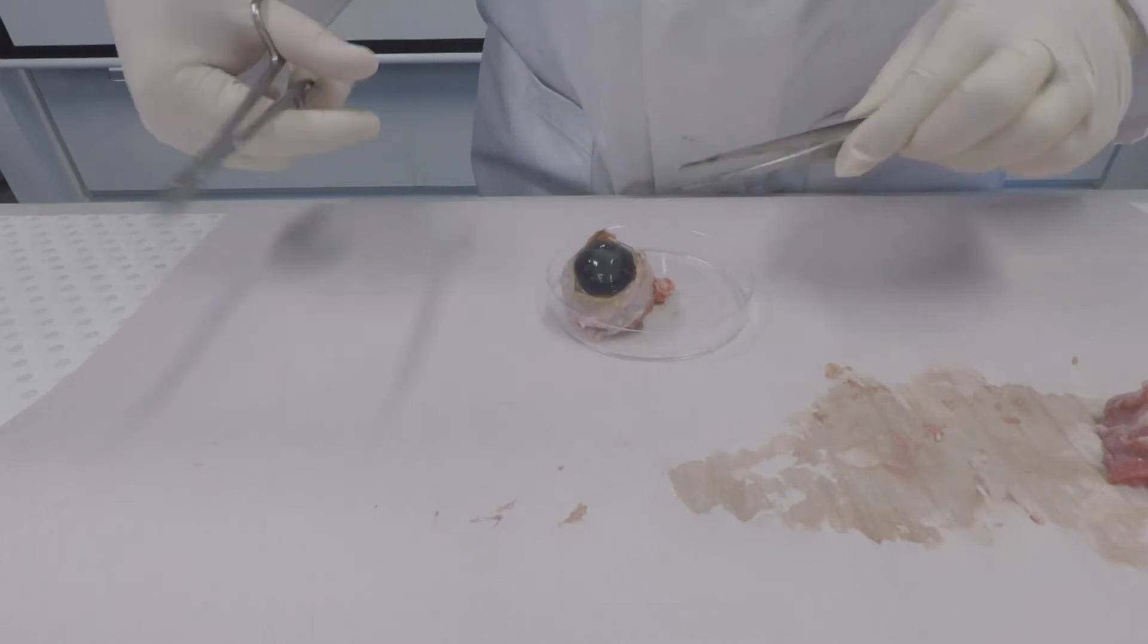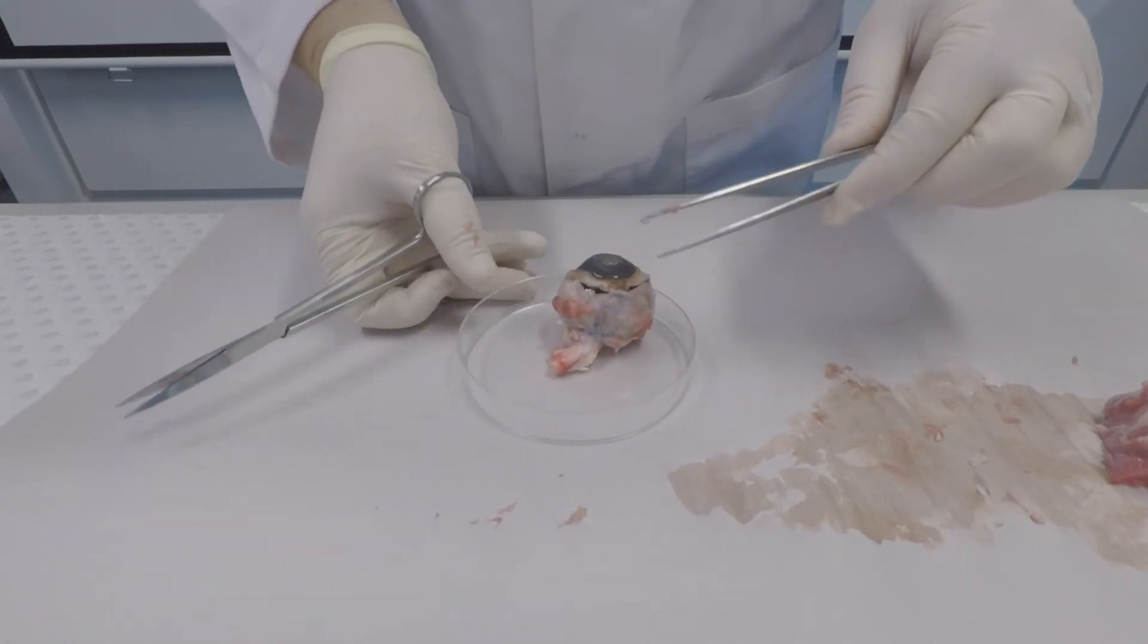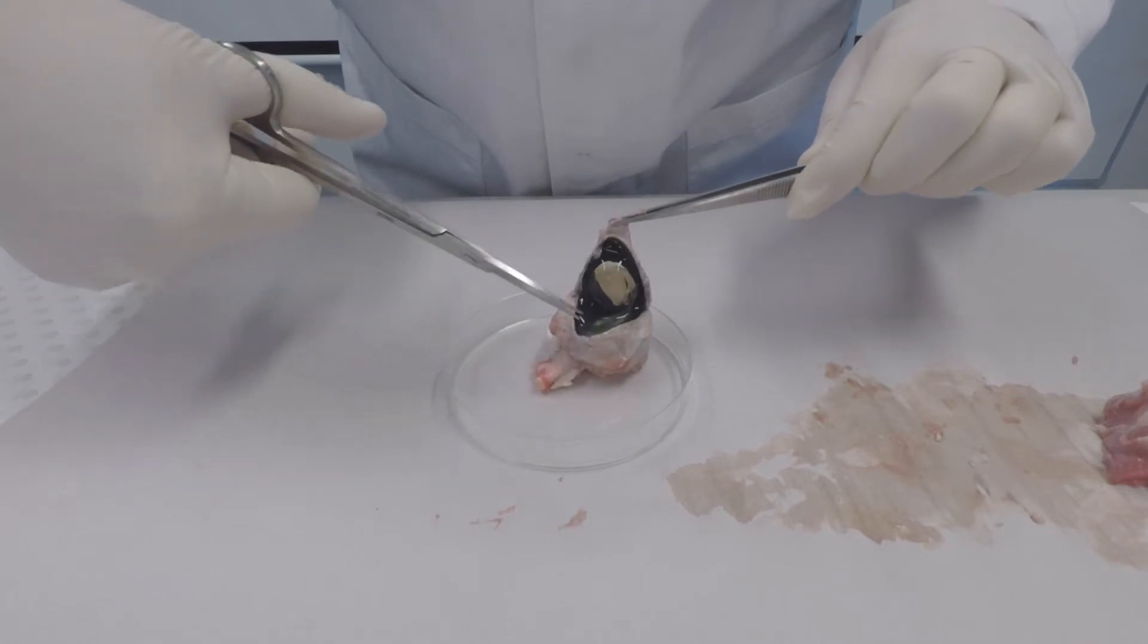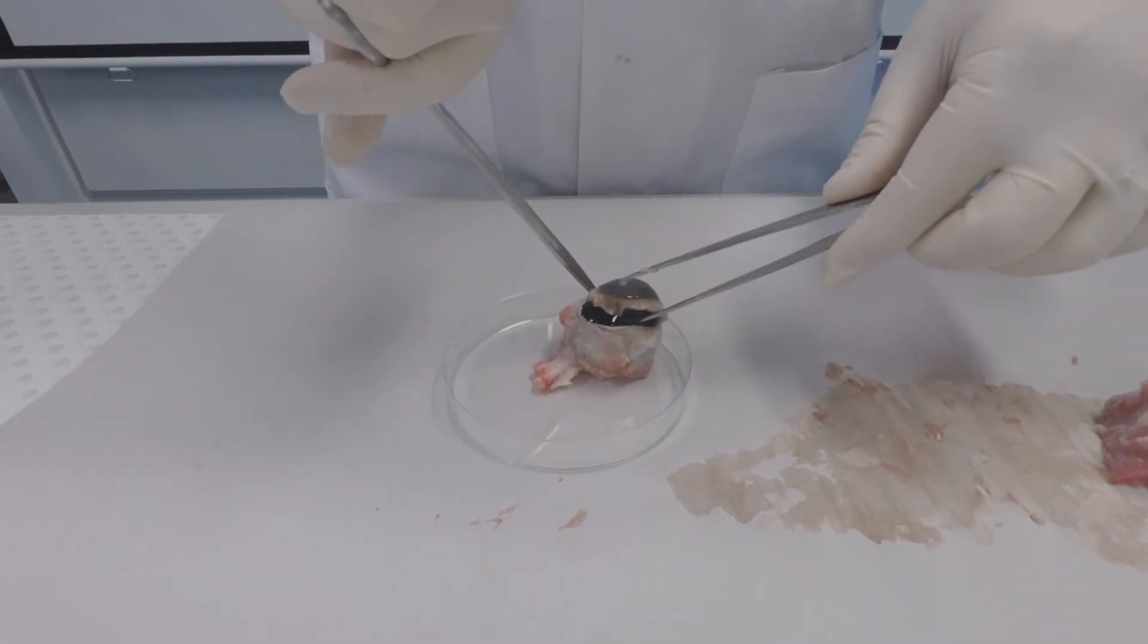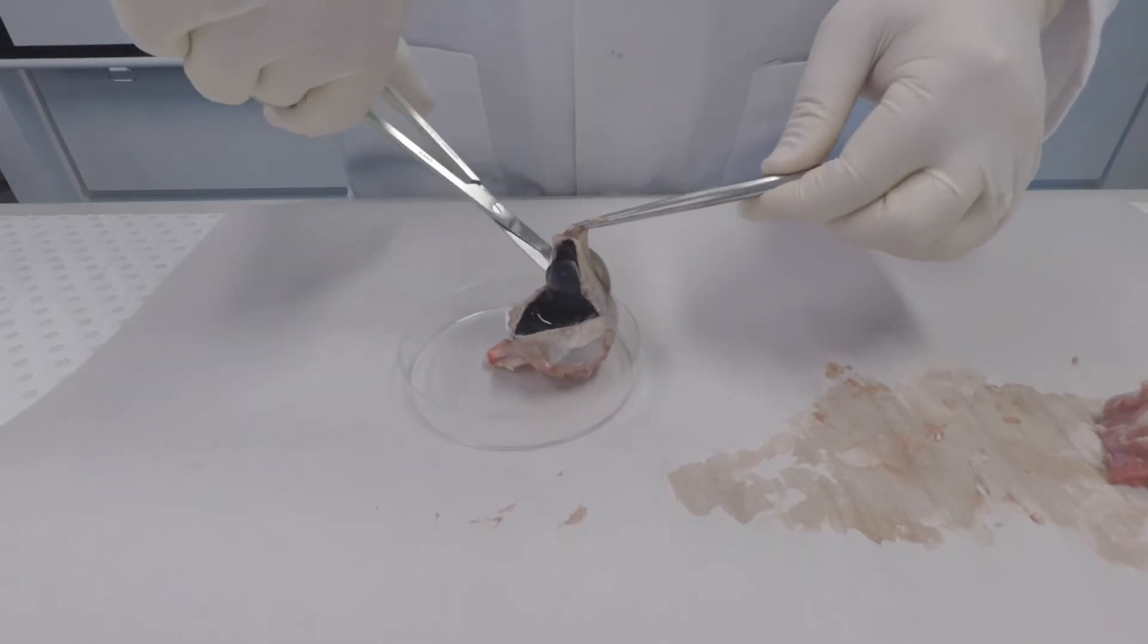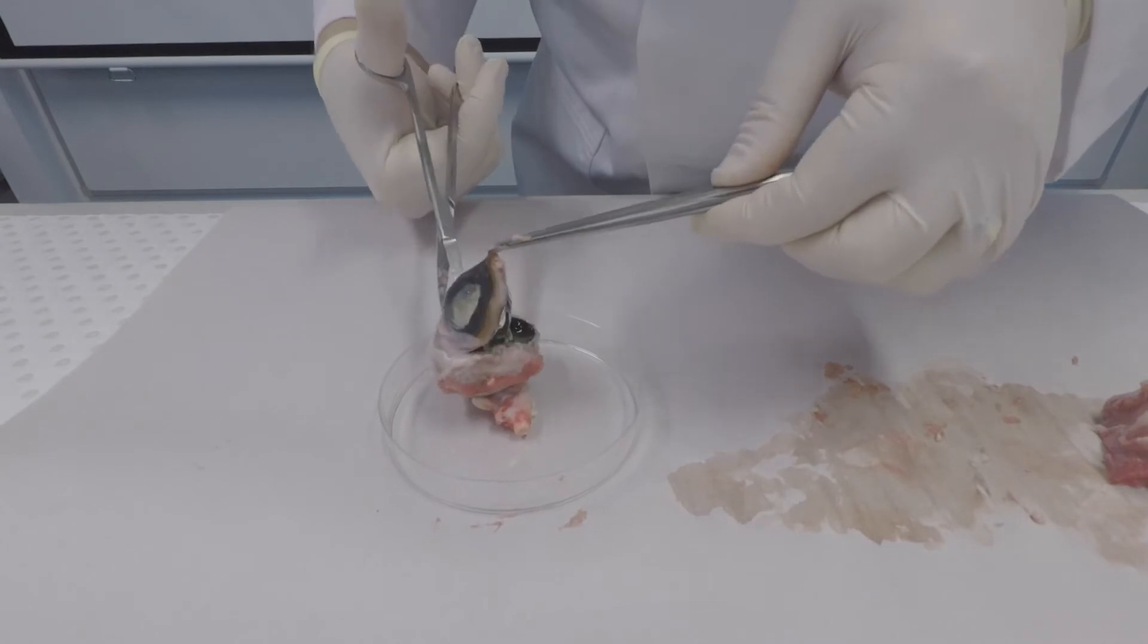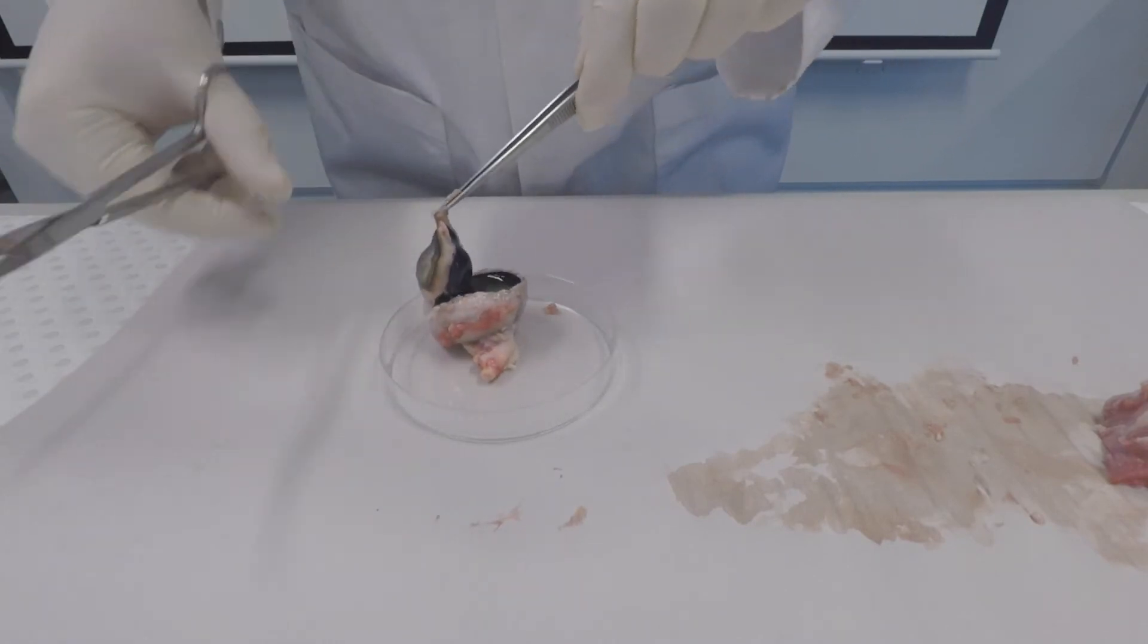Around the edge of the cornea underneath you can see a dark circular pattern—that's the ciliary body. Inside the eyeball you can see a clear fluid. It's quite viscous and thick. This is the vitreous body or vitreous humor, and that takes up most of the space inside the eyeball. In between the cornea and the vitreous humor is a clear, round or oval structure called the lens.